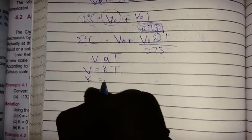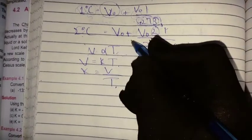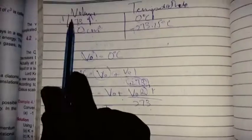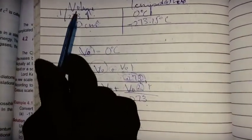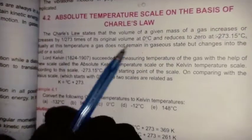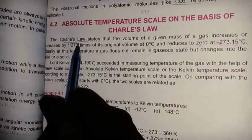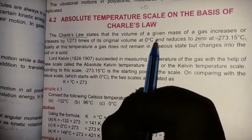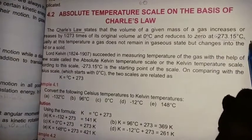The direct relation is K = V/T. When temperature is 0°C, volume is 1/273 times; when temperature is minus 273.15°C, volume will be 0 cm³. Charles Law states that the volume of a given mass of gas increases or decreases by 1/273 times of its original volume at 0°C, and reduces to 0 at minus 273.15°C.